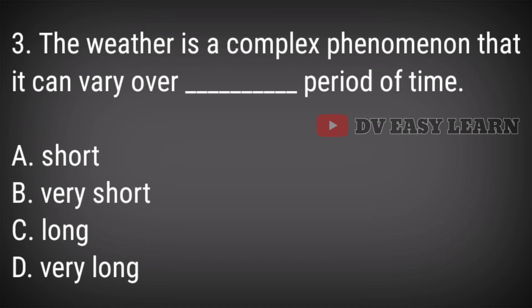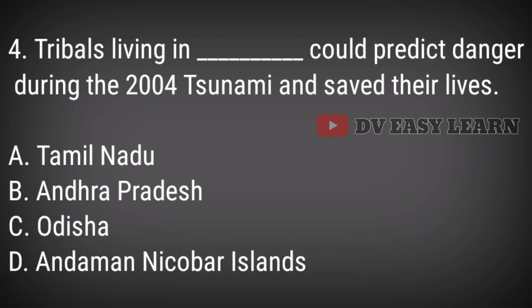Question 3: The weather is a complex phenomenon that it can vary over what period of time? Question 4: Tribals living in which location could predict danger during the 2004 tsunami and saved their lives? Answer: Andaman Nicobar Islands.